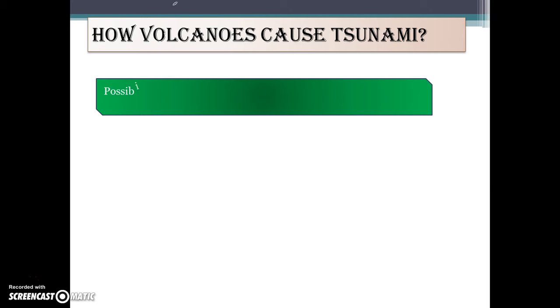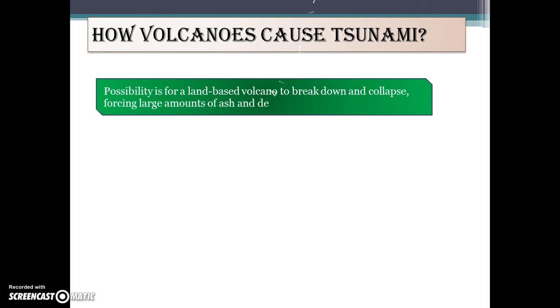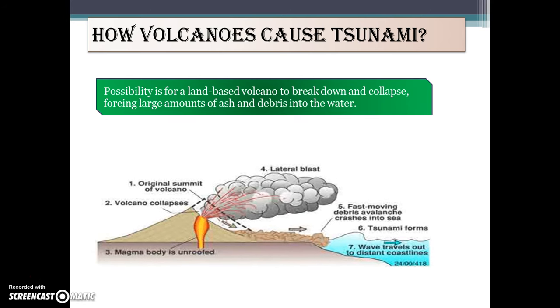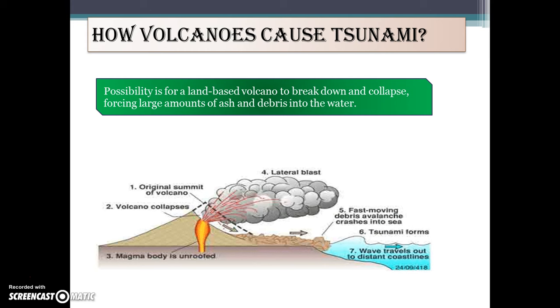How does a volcano cause a Tsunami? One possibility is for a land-based volcano to break down and collapse, forcing a large amount of ash and debris into the water. The sudden displacement of the water column transfers to kinetic energy and a refractive wave. Tsunami can also be induced by submarine volcanoes — these underwater volcanoes can collapse downward and spill forth lava hitting the surrounding water quickly.